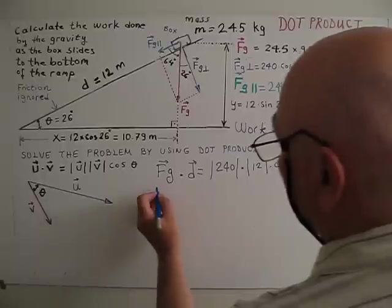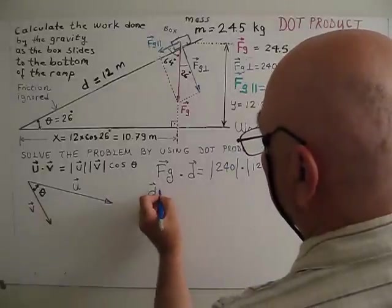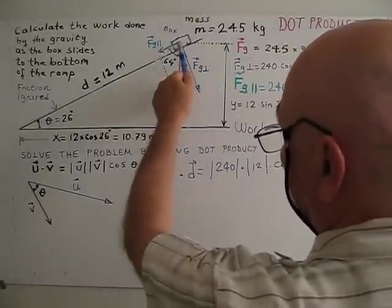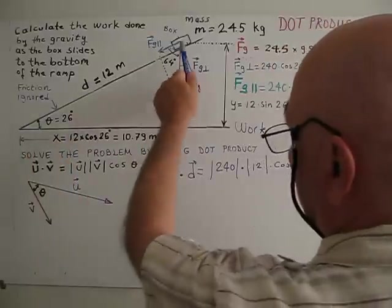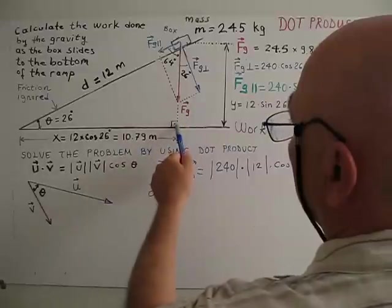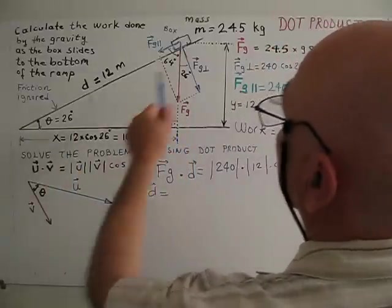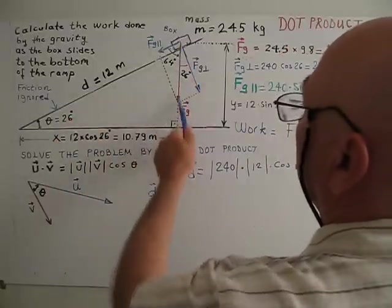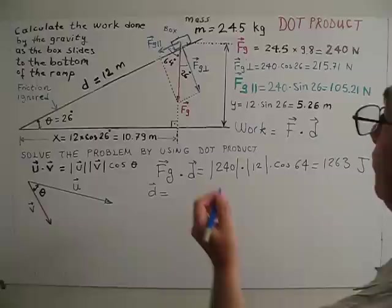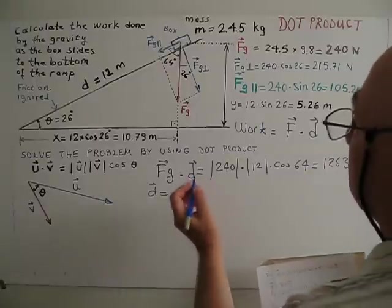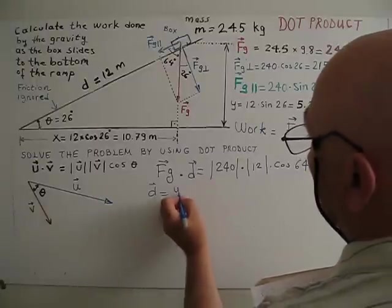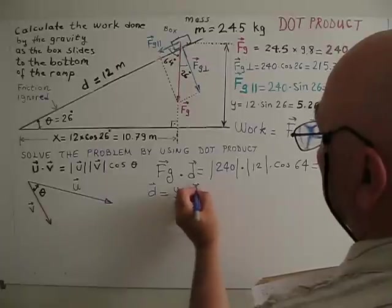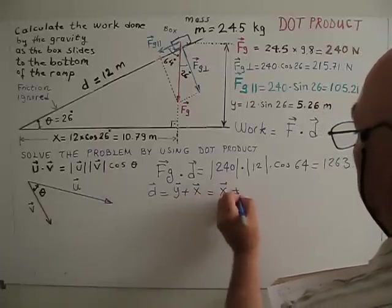We can do this way also. Vector D, from here to here, box is going. This Y component, this is X component. You can go from here to here, or from here to here. Basically, this D will be Y plus X or X plus Y. Normally we write X first.